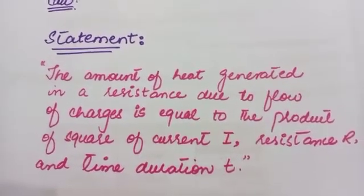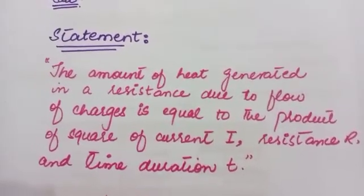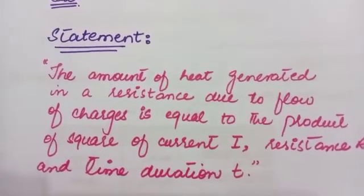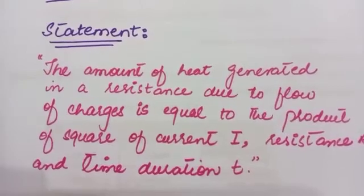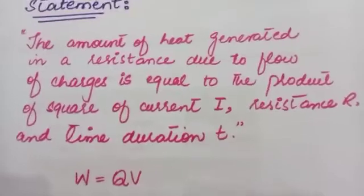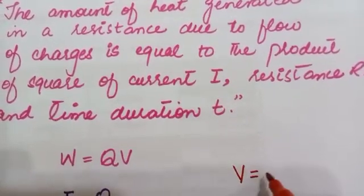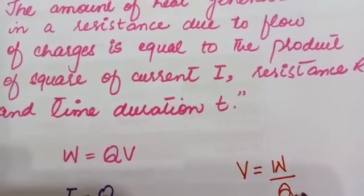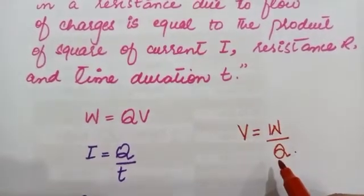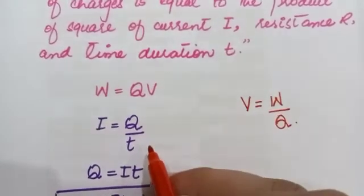Charges continuously moving from higher potential to lower potential become a continuous source of electrical energy. Consider two points with a potential difference of V volts — if one coulomb of charge passes between these points, the energy delivered by the charge would be V joules. We can write the relation: electric potential equals work done per unit charge, so work done W = V × Q.